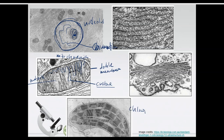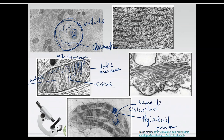Here we have a chloroplast — only found in plant cells, not in animal cells. The darker regions are layers of membrane called thylakoid (T-H-Y-L-A-K-O-I-D). That stack of thylakoid membrane is called a granum. Connecting the granums are lamella. The juicy part of the chloroplast outside of the thylakoid is called stroma. Just like the mitochondria, the chloroplast has a double membrane.